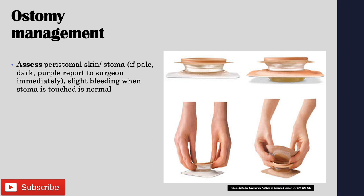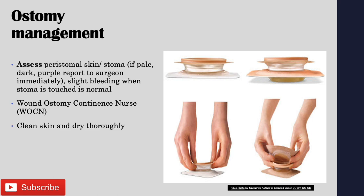When assessing the stoma, you should not see any signs of irritation or reddening of the peristomal skin. The stoma itself should be red and pink. If it's pale, dark, or purple, report that to the surgeon immediately — it can be life-threatening, indicating the intestinal cells are being deprived of oxygen and dying. Slight bleeding when the stoma is touched is normal. There is a dedicated wound ostomy continence nurse who manages ostomies. When changing the ostomy device, clean and dry the skin thoroughly. The appliance should be changed twice a week or per facility recommendation, and advise the patient to empty the colostomy bag when it's one-third to one-half full.